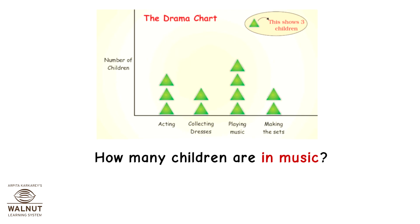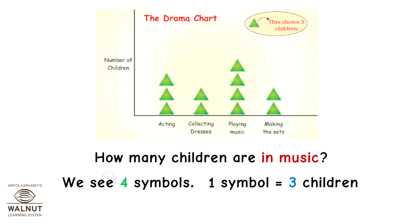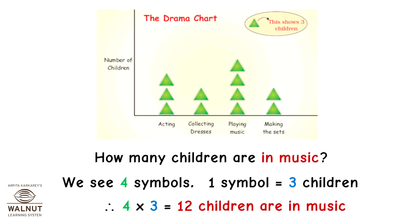How many children are in music? We see four symbols; one symbol is equal to three children, so 4 into 3 which is equal to twelve children are in music.